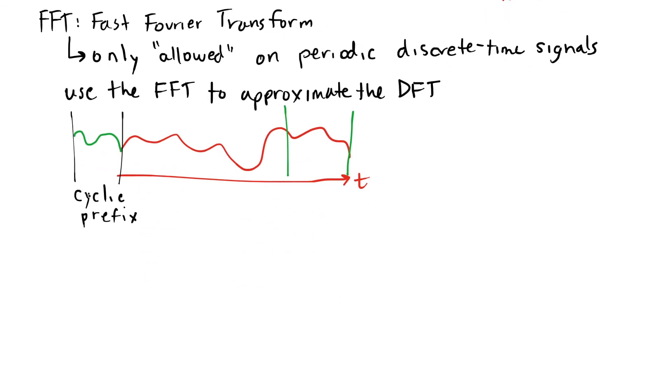The amount of time that we spend sending the cyclic prefix will be part of the protocol. So we'll agree on that ahead of time. We can just throw it out at the receiver when we're done taking the Fourier transform. And it becomes a little bit of waste. But again, it's necessary to allow us to use the FFT.